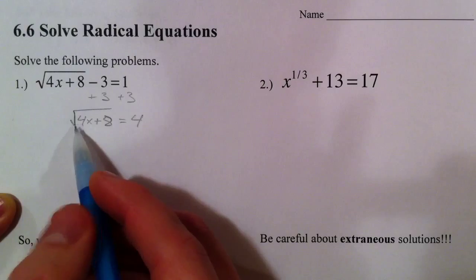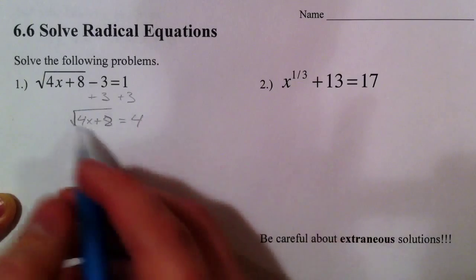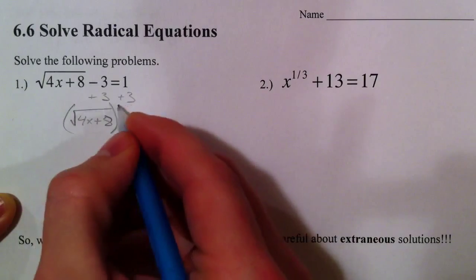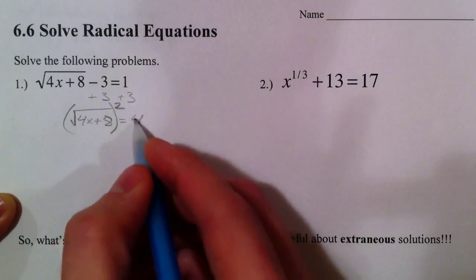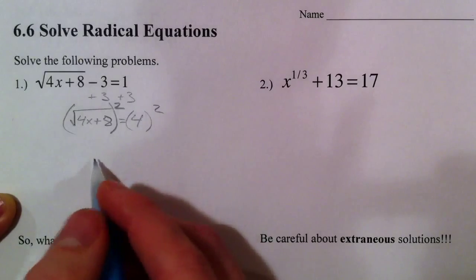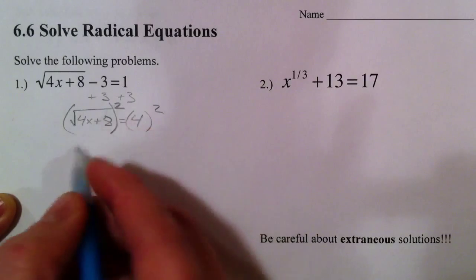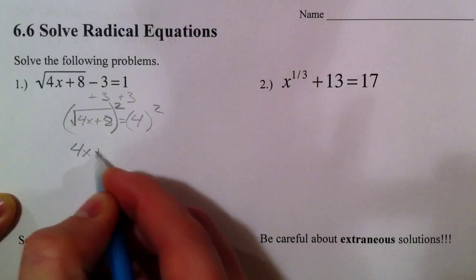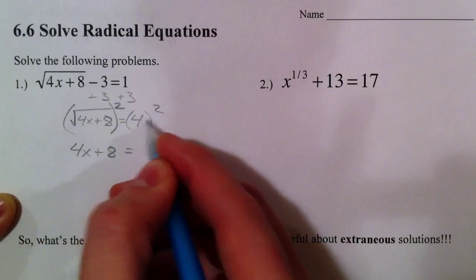So we've got to undo the square root by squaring it. Remember the square root is like the 1 half power, and so we're undoing the 1 half power by raising it to the second power. Those are reciprocals. And so that undoes it, so we're left with 4x plus 8, and 4 times 4 is 16.